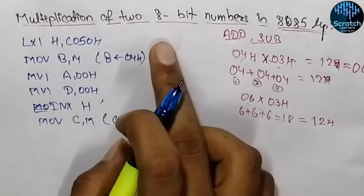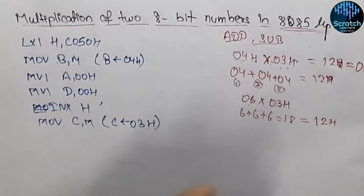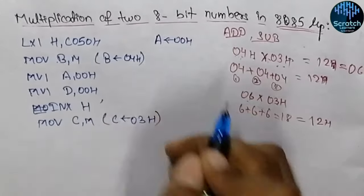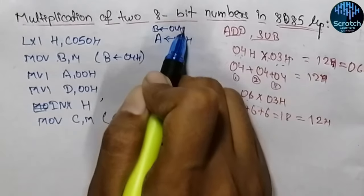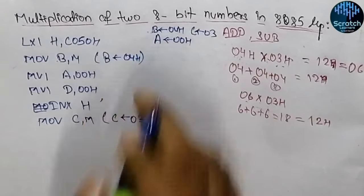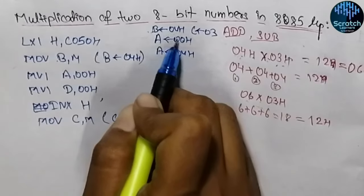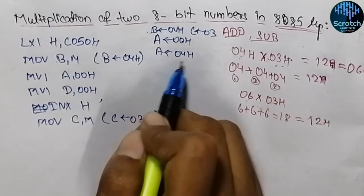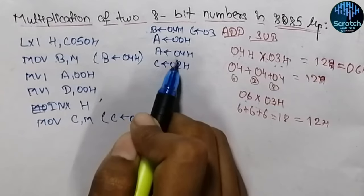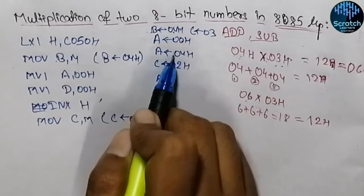So till now we have both the data stored in register B and register C. Now how we will add them? In the first step, the accumulator is 00 hex, register B is containing 04 hex, and register C is containing 03 hex. Now we will add the content of B with the accumulator. So the accumulator will be containing 04 hex — 00 plus 04 equals 04 hex. And simultaneously, we will decrease the content of register C, because we have added the content of B for the first time, so we are also decrementing it.